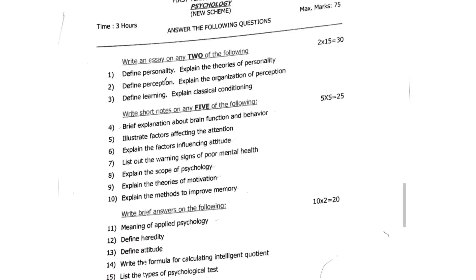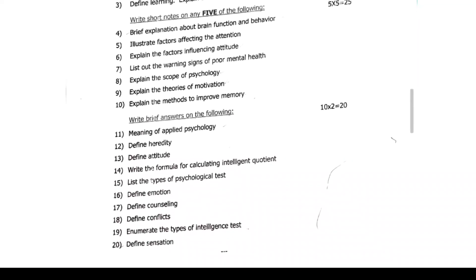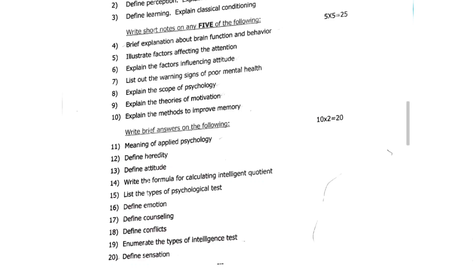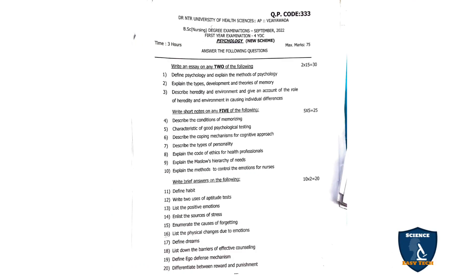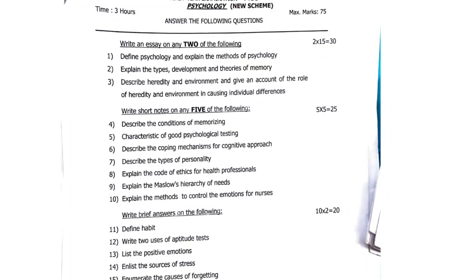Define psychology and explain the methods of psychology. Explain the types, development and theories of memory. Third question: describe heredity and environment and give an account of the role of heredity and environment in causing individual differences. These questions come under essay questions.